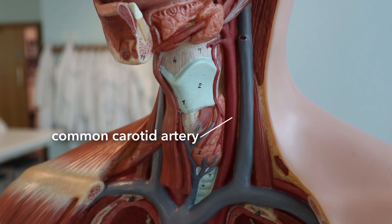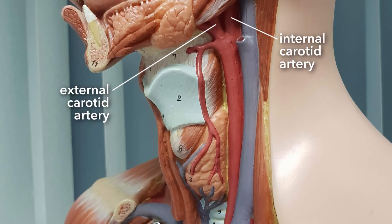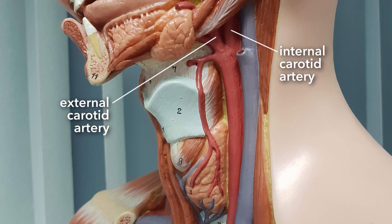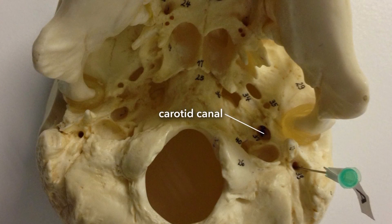In the neck, the common carotid artery runs up on either side — left and right. As they reach about the level of the jaw and the thyroid cartilage, they split into the internal and external carotid arteries. The internal carotid artery goes into the skull, passing through the carotid canal, to supply blood to structures inside the cranial cavity — most notably the brain.